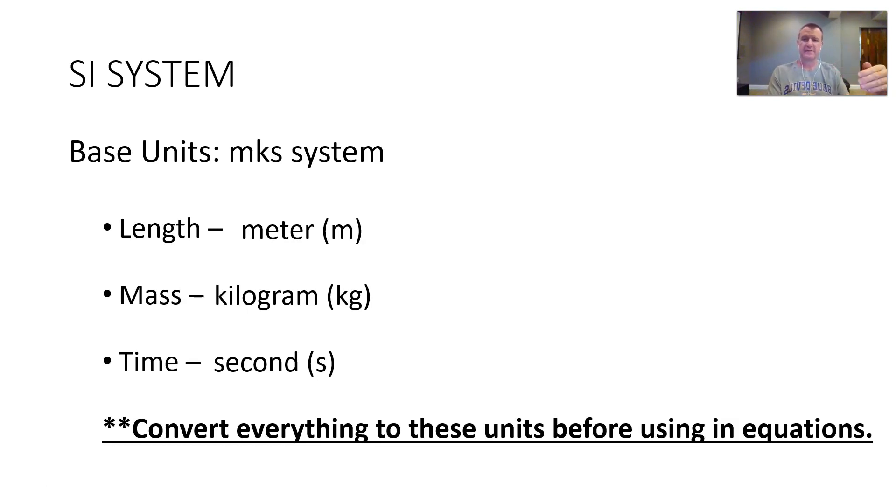Now, with this, you need to convert everything to these base units before you use them in an equation. That's extremely important. So if you have a distance or a length in centimeters, you need to convert that to meters before you put an equation. Same thing with mass. If it's in grams, you need to put in kilograms. If you've got something in hours, you need to convert that to seconds before you use them in an equation. We will have very few exceptions to that rule this year in physics class. And even so, you can always go to meters, kilograms, and seconds. So keep that in mind.